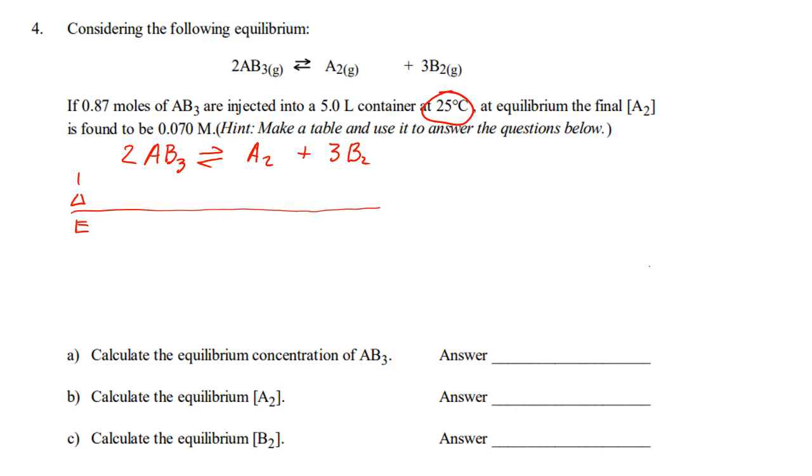So, 2AB3 makes A2 plus 3B2. Now, we're in a 5 liter container, so we have to do a little bit of math. So, it's going to be 0.87 divided by 5. So, we're going to start with initially 0.174. Now, how did I get 0.174? I went 0.87 divided by a 5 liter container. And that means it implies that we start with 0A and 0B.